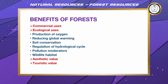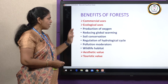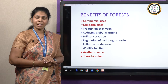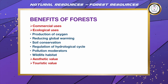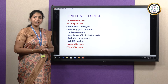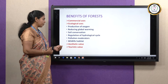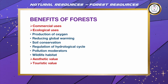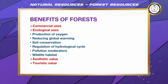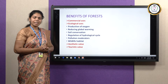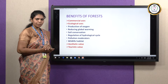Moving on to ecological uses, these form the major part and have a major impact on the environment. Production of oxygen — without trees, we cannot breathe because oxygen is an important product of photosynthesis. Reducing global warming — carbon dioxide is a greenhouse gas, and trees absorb carbon dioxide, thereby minimizing global warming. Soil conservation — trees hold the soil tightly and intact, maintaining soil fertility. Regulation of hydrological cycle — trees conserve water and avoid wastage, thereby regulating the hydrological cycle.